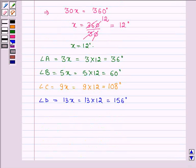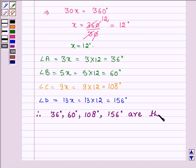Therefore, 36 degrees, 60 degrees, 108 degrees, and 156 degrees are the angles of the quadrilateral.